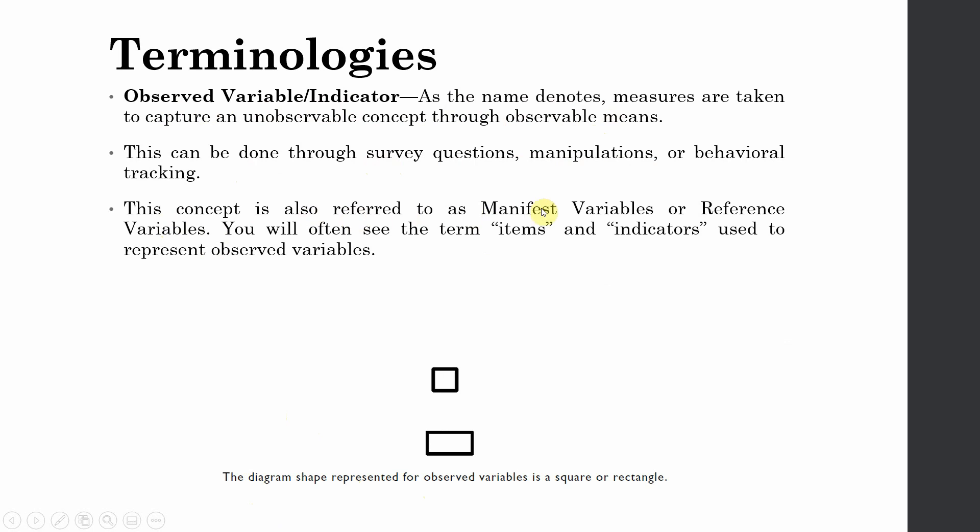This concept is also referred to as manifest variables or reference variables. These are other interchangeable terms used to show observable variables or indicators. You will also see terms like 'items' or 'indicators' used for observable measures or variables.